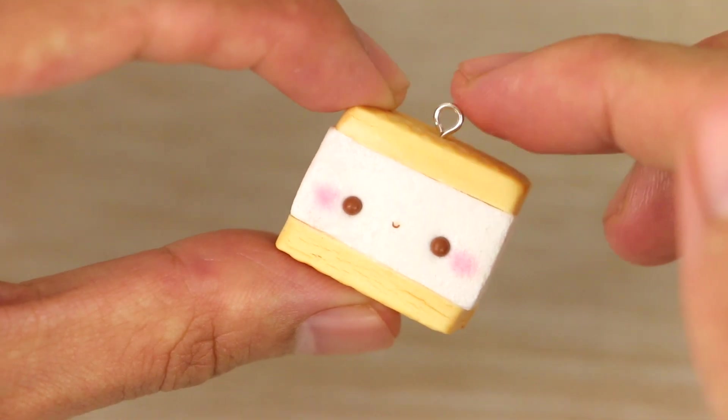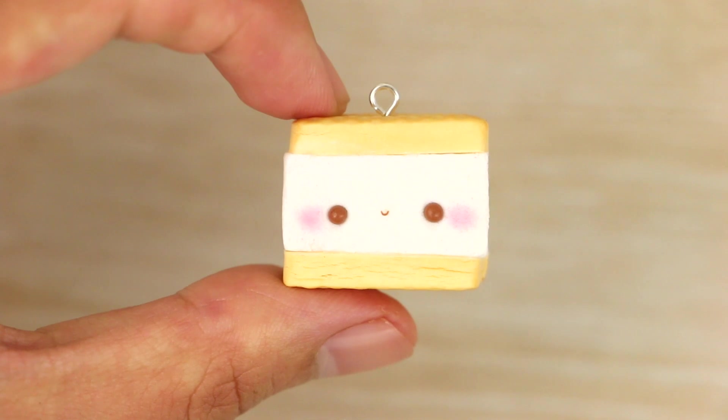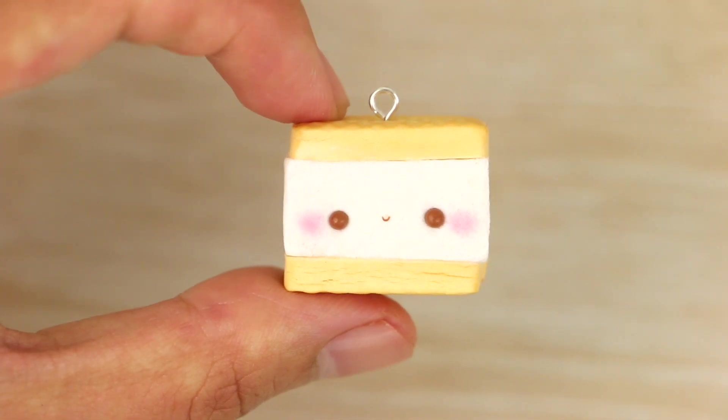And then finally to turn it into a charm, I'm inserting the eye pin. And then once they're both made, I'm baking them in the oven using my package's instructions.